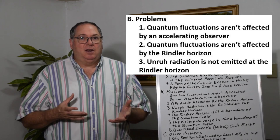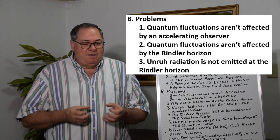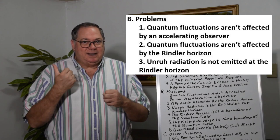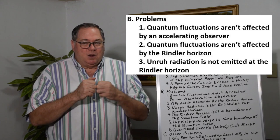The first problem is that quantum fluctuations are not going to be affected by an accelerating observer. If you have a quantum fluctuation particle pair oscillating, and you have an observer 100 light years away who just kicked on his rocket engines, that's not going to affect the quantum fluctuation.